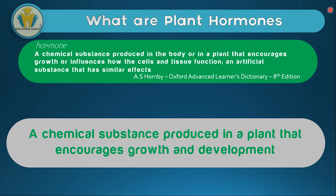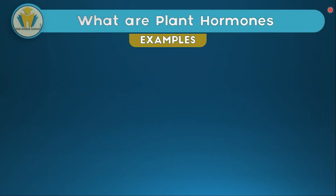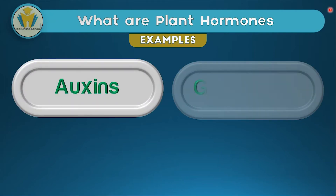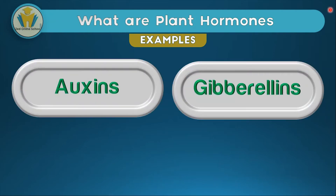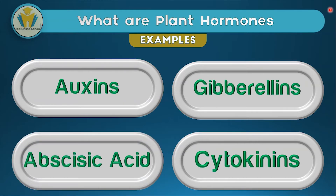A plant hormone is a chemical or artificial substance produced in a plant that encourages growth and development. Examples of plant hormones include auxins, gibberellins, cytokinins, and abscisic acid. These four are just some examples — there are many hormones found in a plant — however these four you should know.